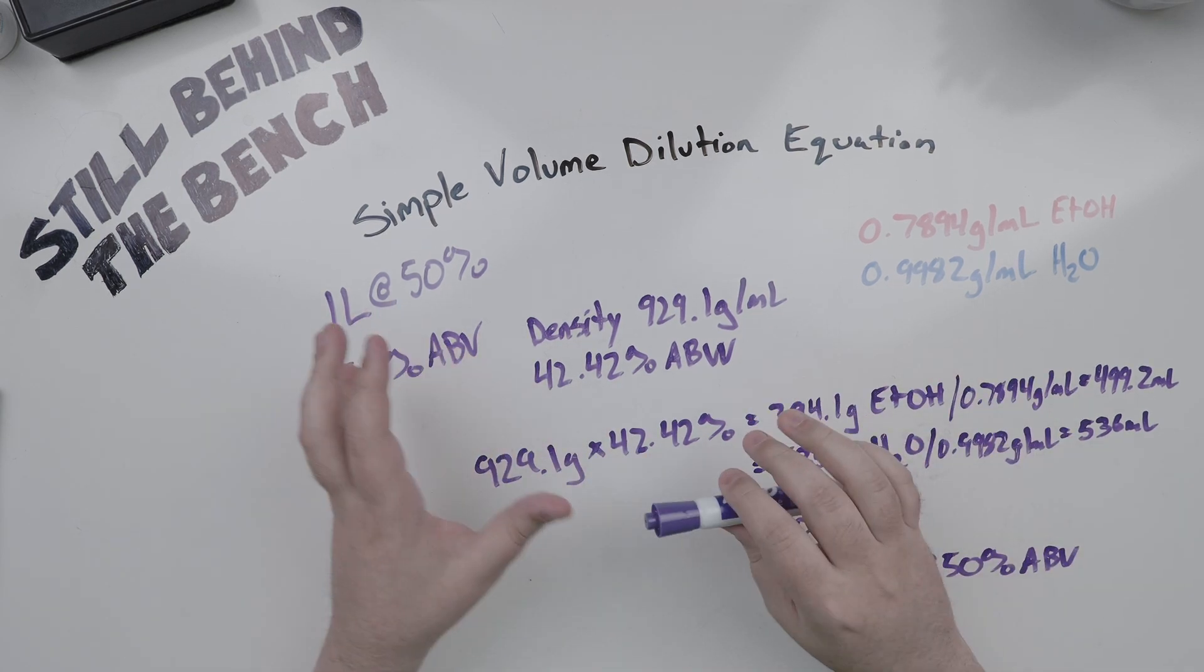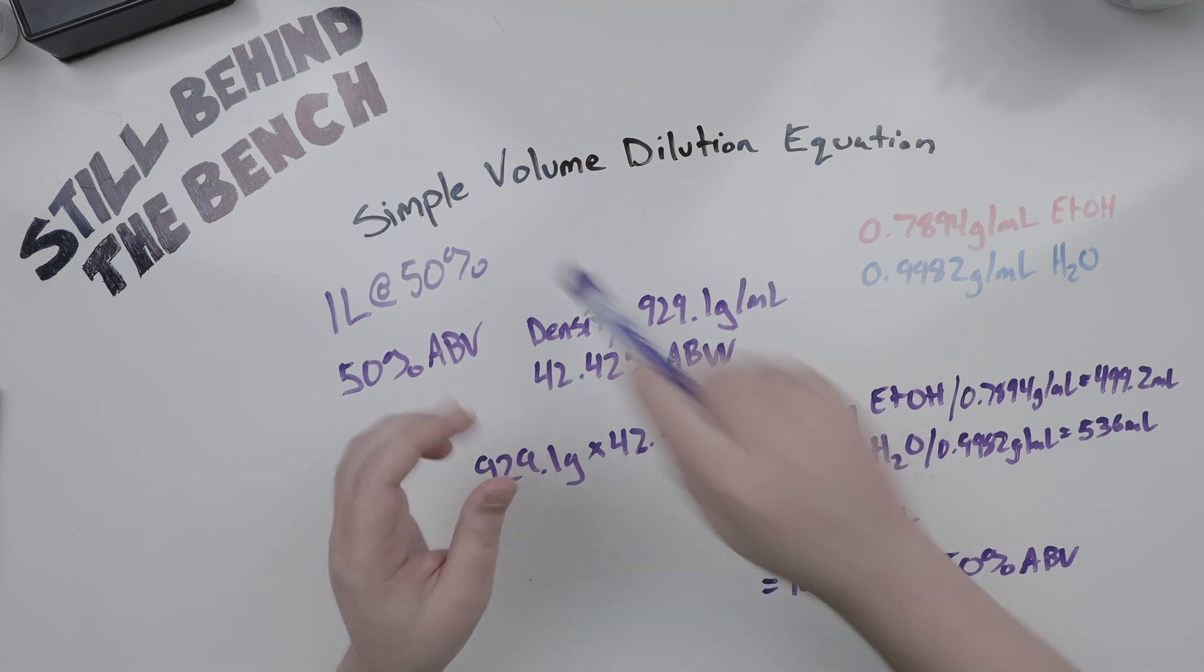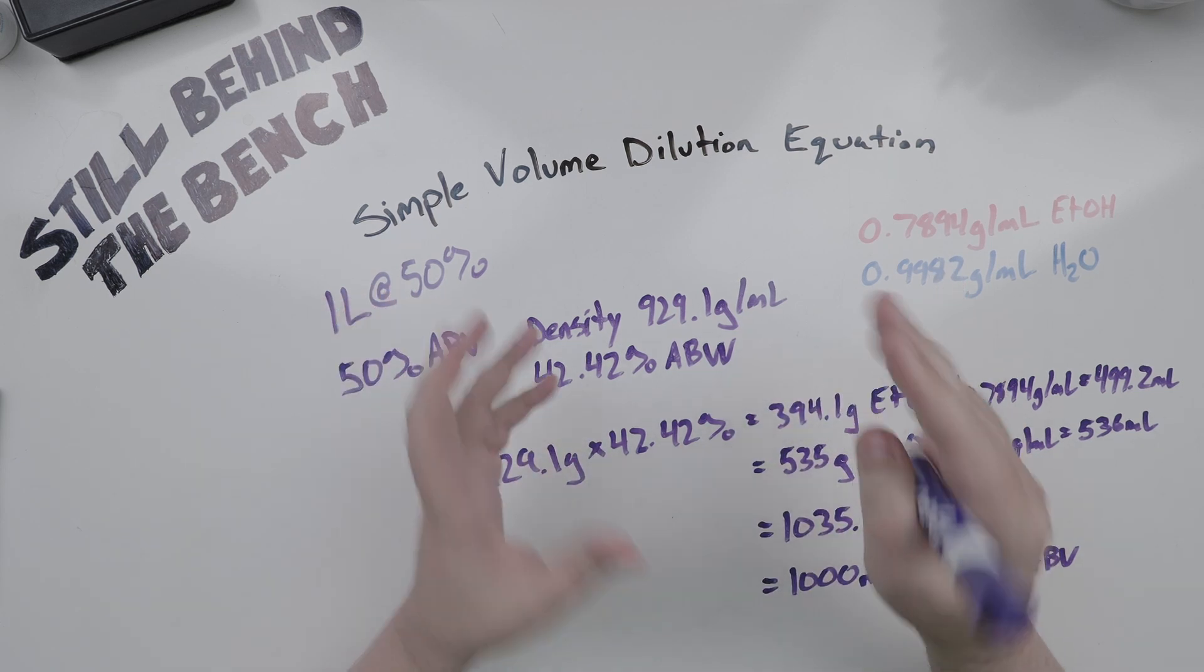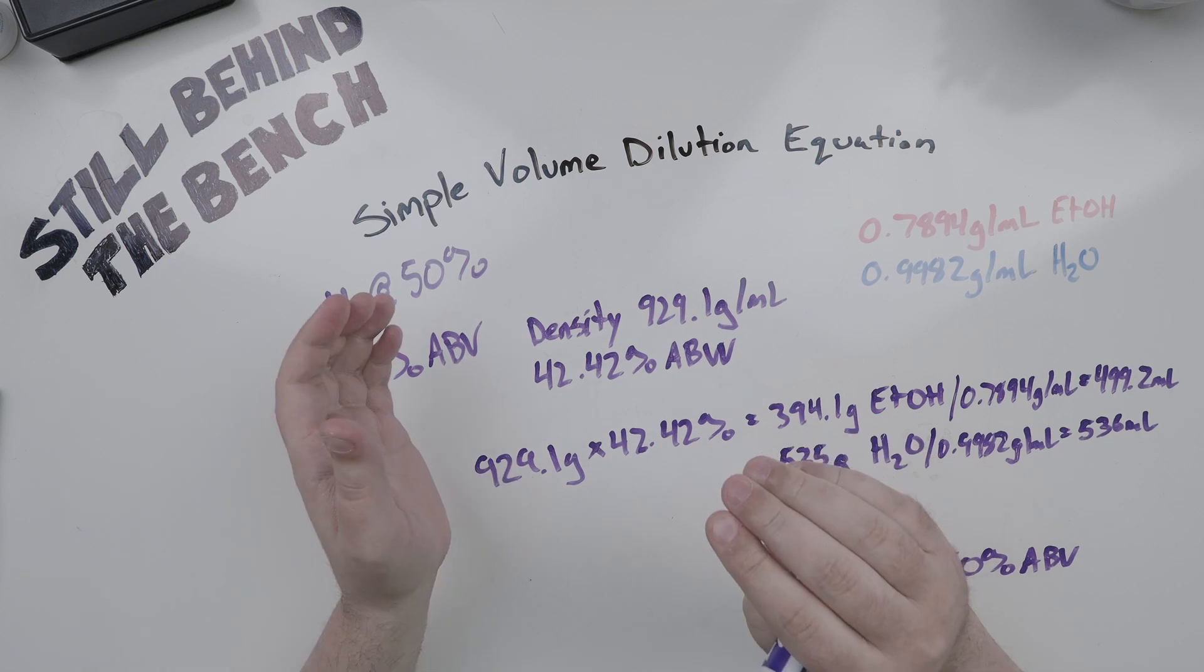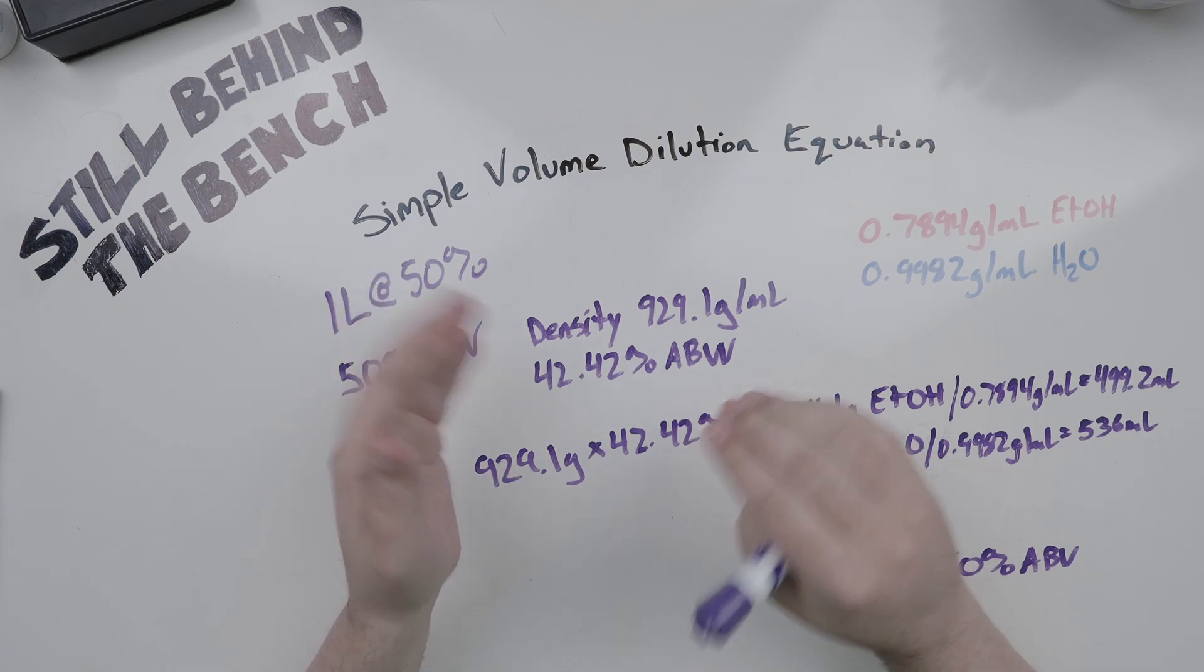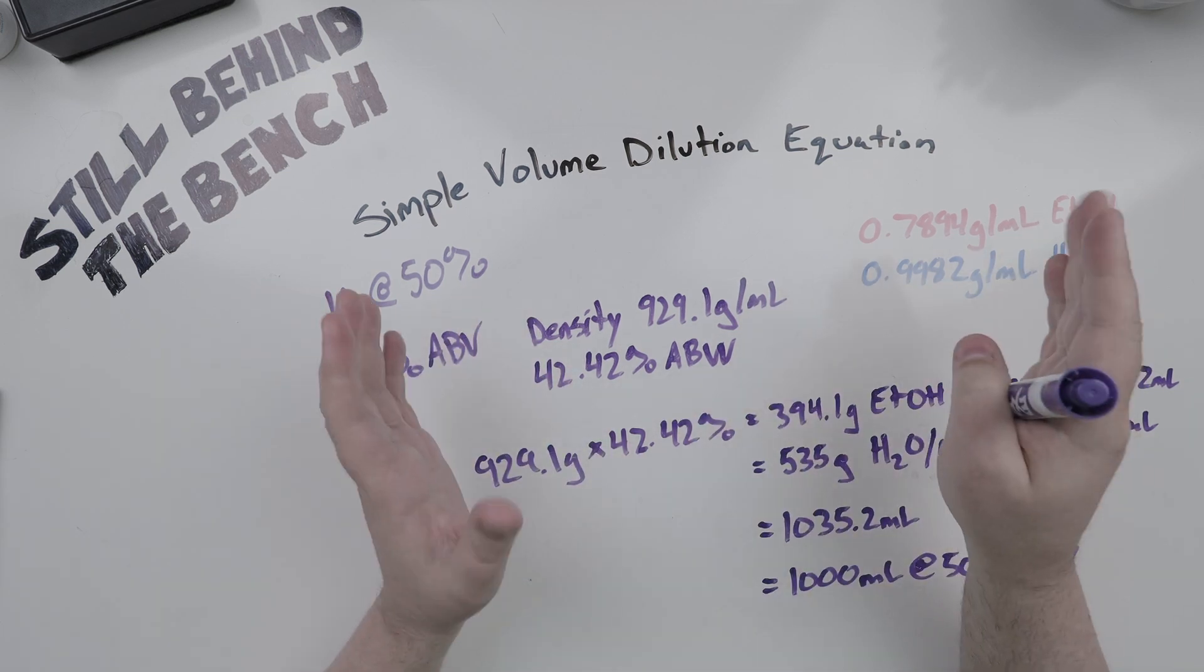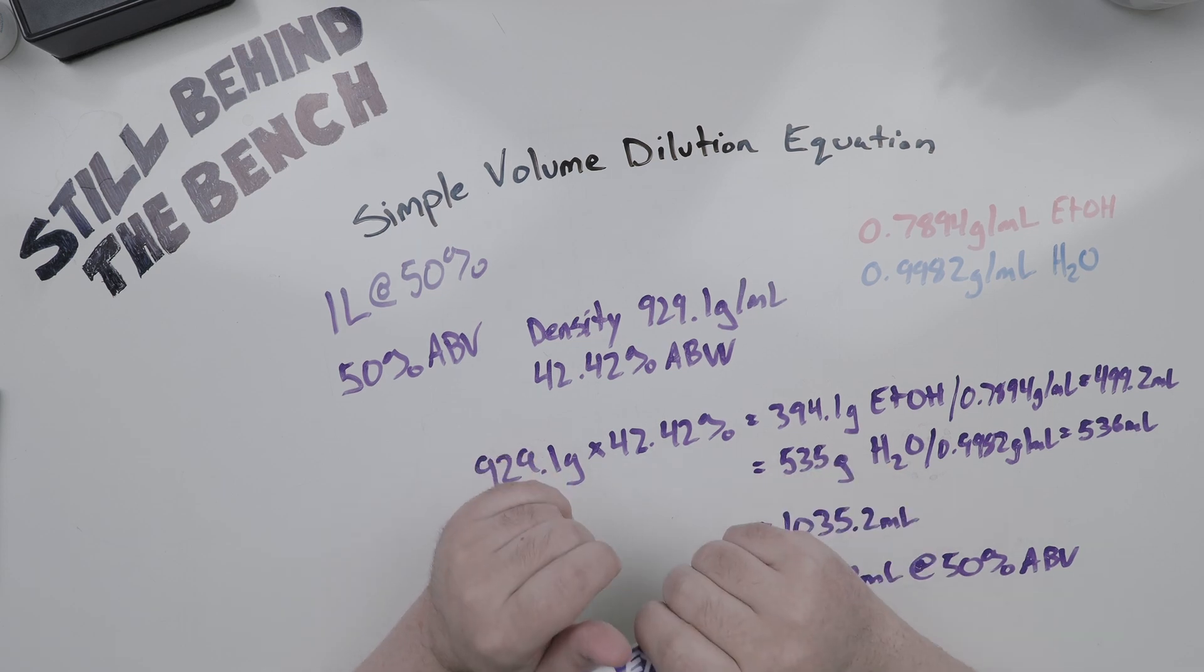Realistically speaking, the amount of error you will typically see from mixing volumes using the simple volume dilution equation typically falls between zero and 3%. Not a huge issue for hobbyists, but it's why professional distilleries absolutely do not use this method. For us hobbyists, it's more than close enough most of the time.